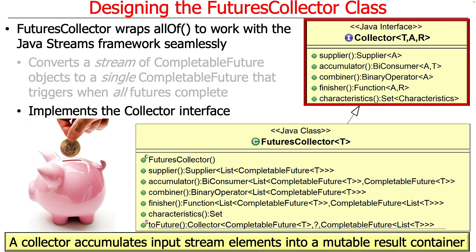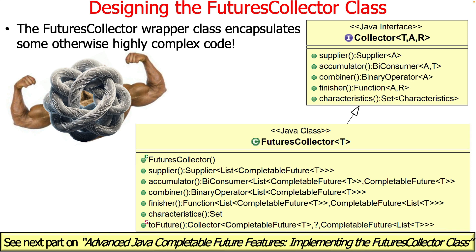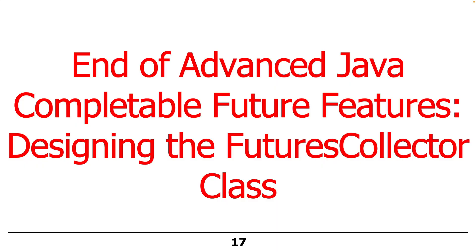Just a quick recap: what a collector does is take elements from a stream like a piggy bank and drop each element into the collector's mutable result container. When everything's done, through the finisher or some other means, you get the result. This is actually a great example of using the finisher for something interesting. Up to this point, most collectors we've looked at - like toList and toSet - didn't really need a finisher and would use the identity finish characteristic. This class, however, is going to do something much more interesting in the finisher, and that's one of the things I want to talk about. FuturesCollector is a wrapper class that encapsulates otherwise complicated code, and we'll talk about the implementation in the next part of the lesson.